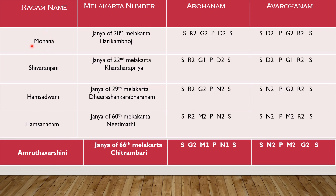Mohana ragam is the Janya raga of the 28th Melakarta Hari Kambhoji. Its Aarohanam and Avarohanam uses Sa, Chathushrutirishabham, Antaragandharam, Panchamam, and Chathushrutidaivatham. According to Dvadasaswarasthanas, Gattu means Antaragandharam here. This is an active ragam.